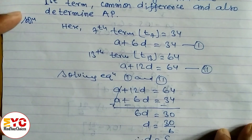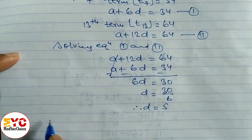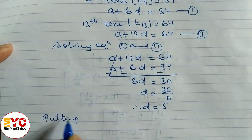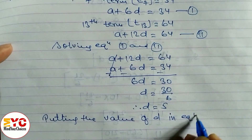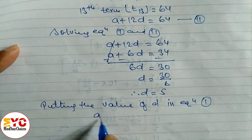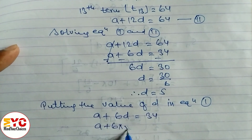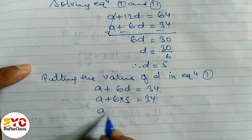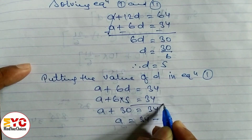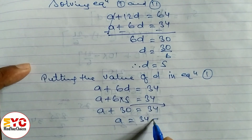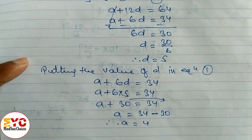Now we put the value of d into equation 1 to find a. So a plus 6 times 5 equals 34, giving a plus 30 equals 34. Taking 30 to the right side: a equals 34 minus 30, therefore a equals 4.